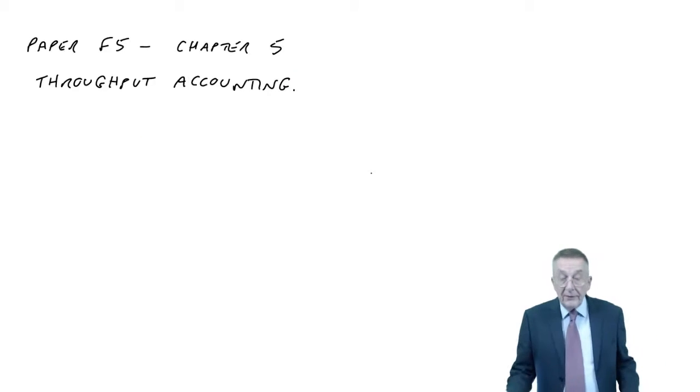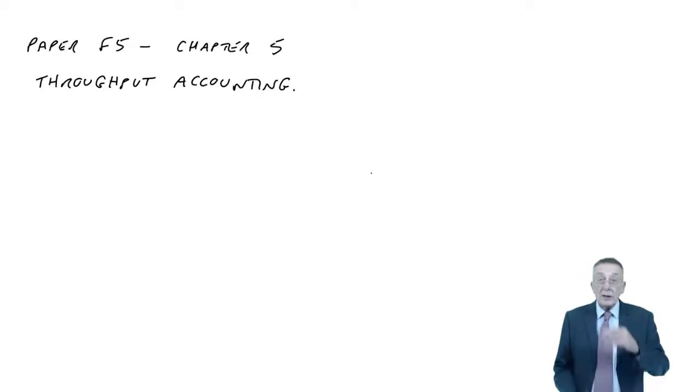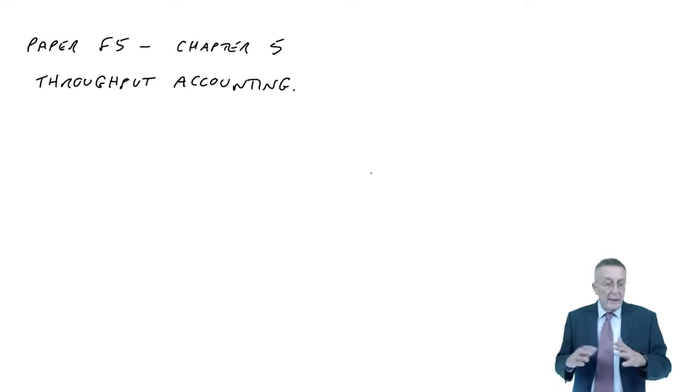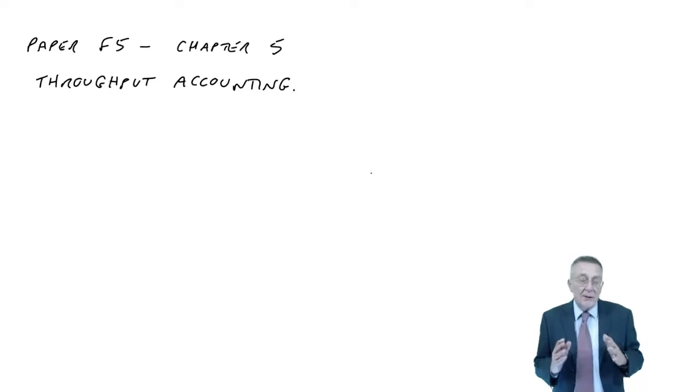This lecture is on chapter five of the paper F5 lecture notes which is called throughput accounting and what it relates to, you'll see when I work through an example, is when we're making several products but where we've got limited resources available and how to decide how best to use them.